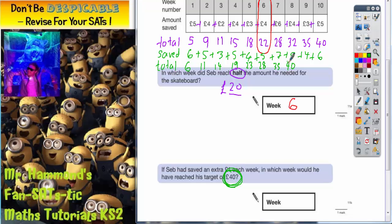Now as you can see this is the magic number that we're trying to hit here, £40. It matches with this £40 in the question. So if we just follow it up, you can see it is in week number 8. So the answer to that question is week 8.